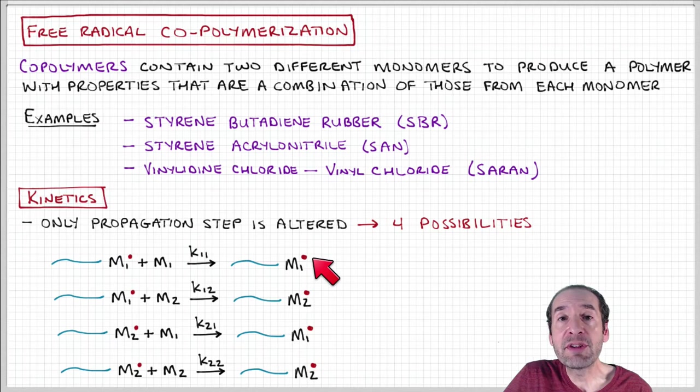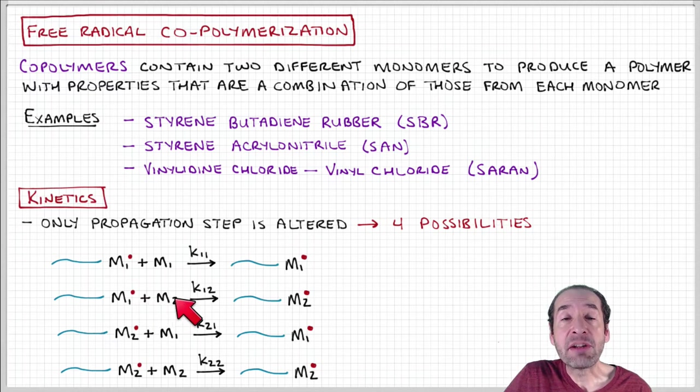But now we have some other possibilities for what can happen. This growing chain with monomer one at the end can add monomer two, because now we have two different monomers if we're thinking about two-component copolymerization.